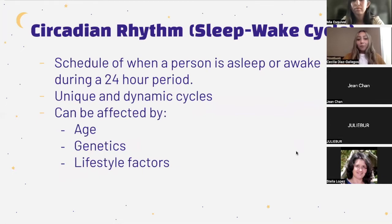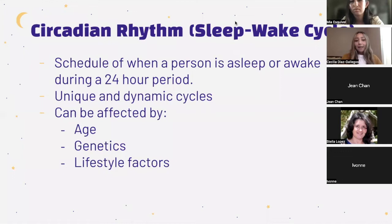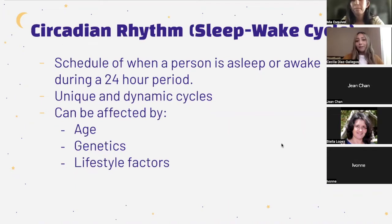One of the most important circadian rhythms is the sleep-wake cycle, which refers to the schedule of when a person is asleep or awake during each 24-hour period. Each person's exact timing is unique and dynamic. When the sleep-wake cycle works properly, it can help people get approximately seven hours of sleep at night and stay awake for around 17 hours during the day. The sleep-wake cycle can be affected by age, genetics, and lifestyle factors, and disturbances can cause sleeping problems.